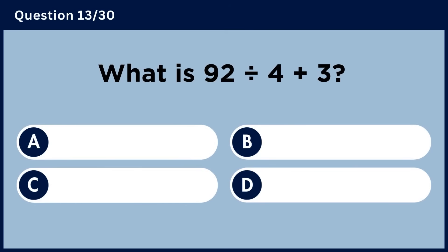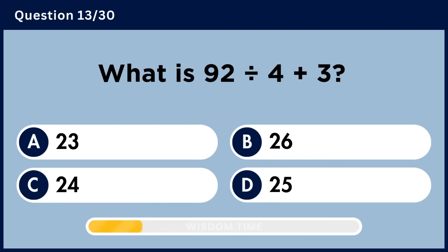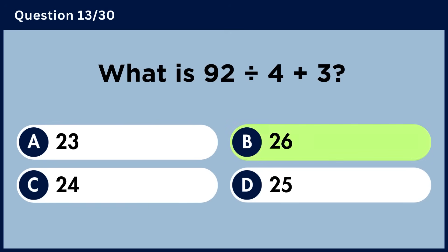What is 92 divided by 4 plus 3? Answer B: 26.